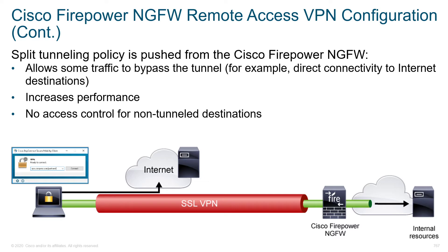Split tunneling is not a new concept. Just as before, we can allow some traffic to bypass the tunnel — if you want to go to the internet or stream music while you work, you'd be streaming directly from the streaming server like Spotify, not bringing all that traffic up to headquarters and pushing it back through the VPN. This takes a lot of load off the head end. It doesn't sound like much for one user, but with hundreds or thousands of users it becomes very difficult to handle. The downside is there's no access control for non-tunnel destinations, so it's not a perfect solution — it's a matter of what fits your business best.